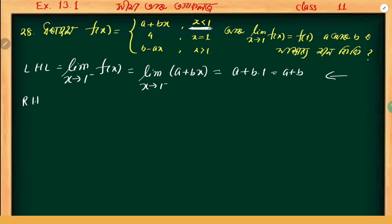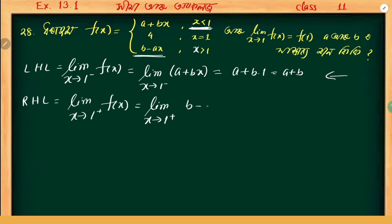Now we calculate the right-hand limit. Right-hand limit as x tends to 1 positive: since x is greater than 1, the condition gives us b minus ax. Substituting x tends to 1, we write b minus a into 1, which means right-hand limit equals b minus a.